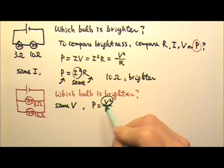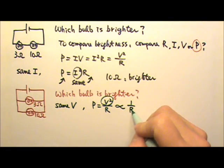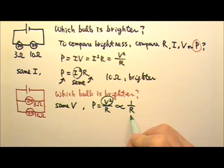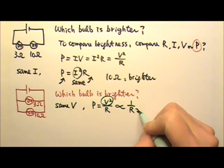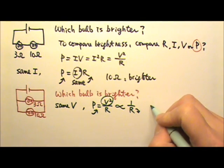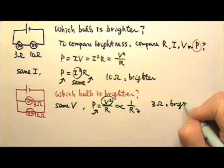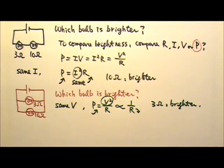Now they both have the same voltage. That means the power is proportional to 1 over R. That means the bulb that has a smaller resistance has a higher power. So in this case, the 3 ohm bulb is the brighter one.